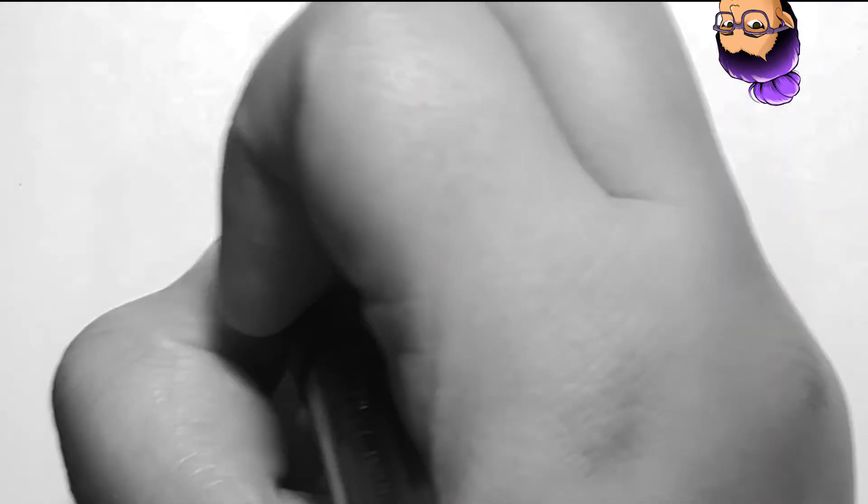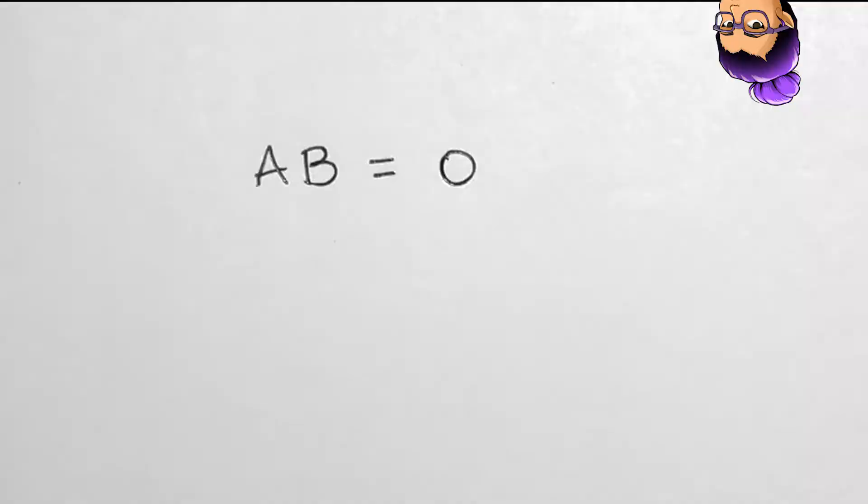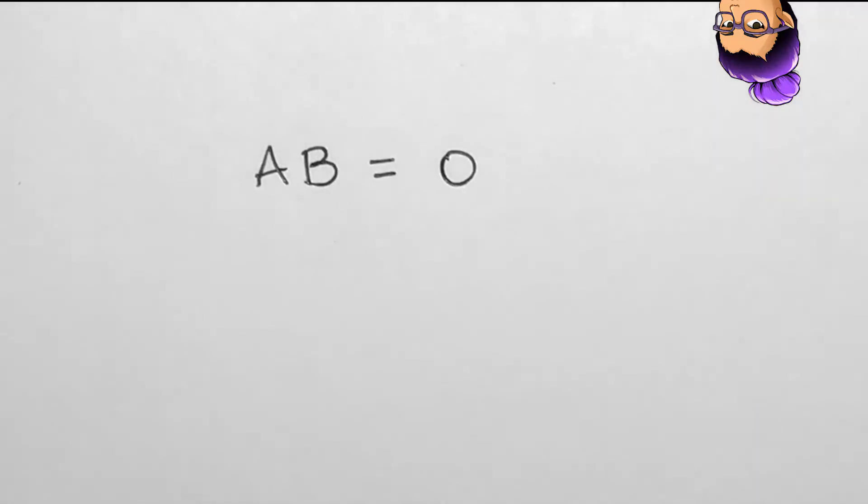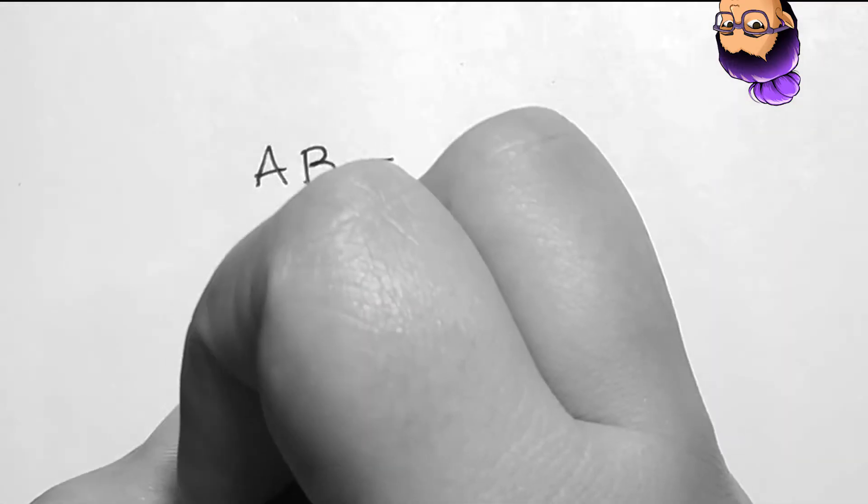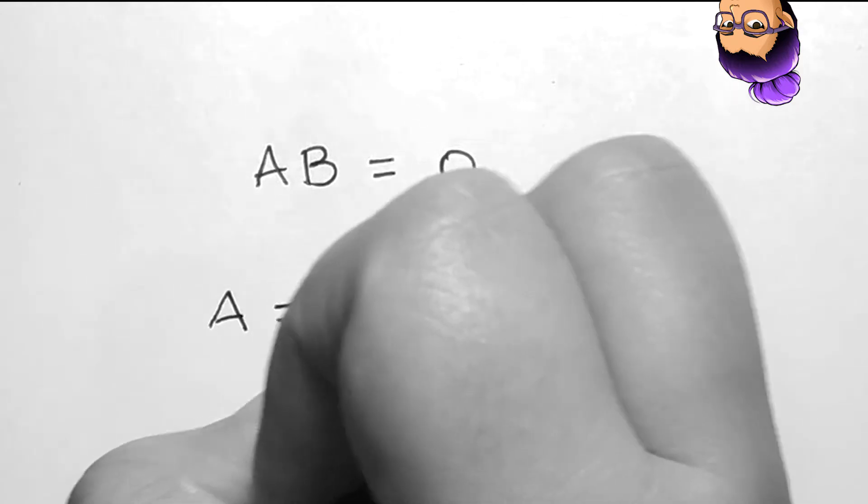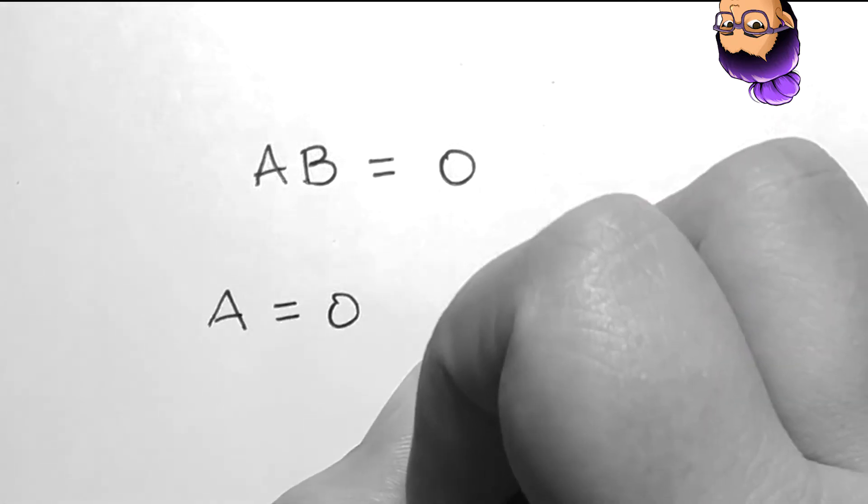The zero product rule states that if we have a product equal to zero, such as a times b equals zero, then each individual factor, a then b, can be set equal to zero, rather a equals zero and b equals zero.